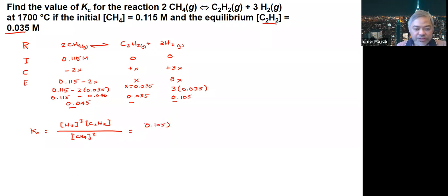And then we substitute it with the given value. So you have 0.105 to the 3 times 0.035 divided by 0.045 squared. If we're going to do the operation here, you're going to get a value around 0.020. So this is the value of your Kc.